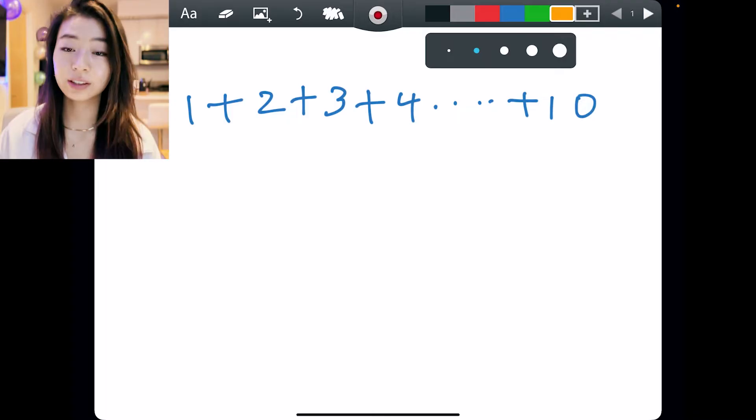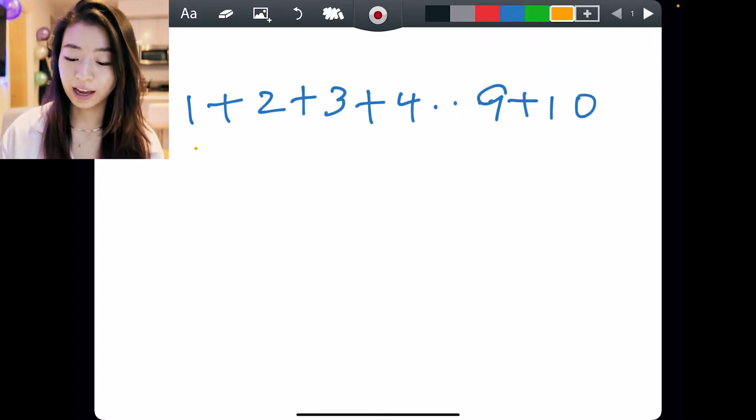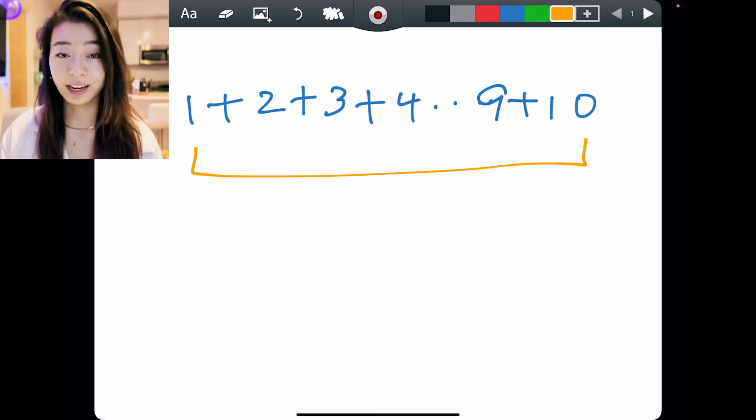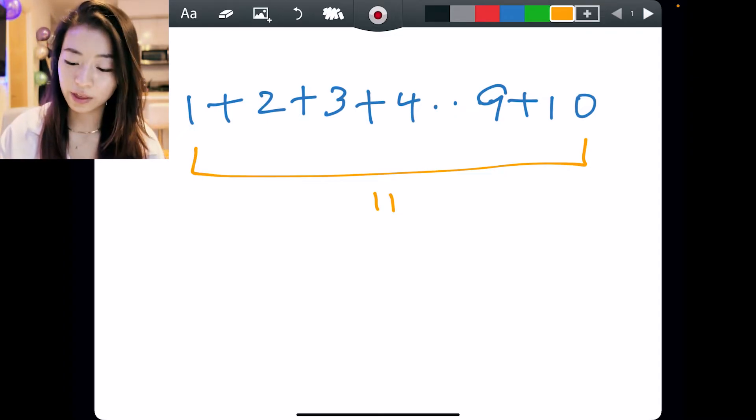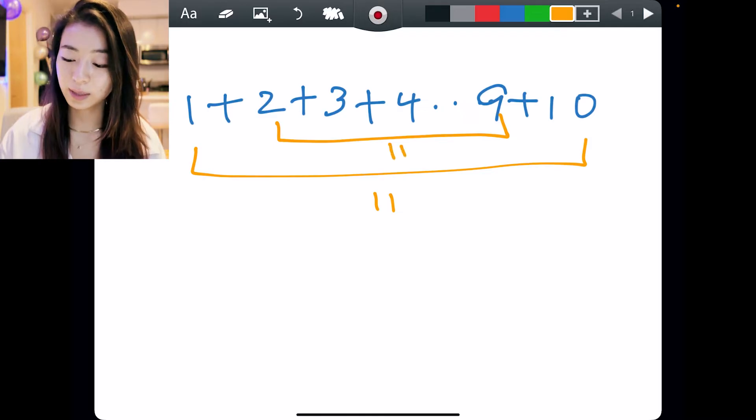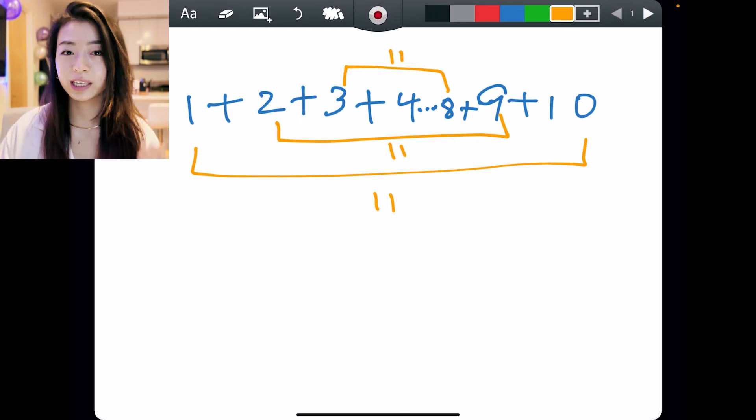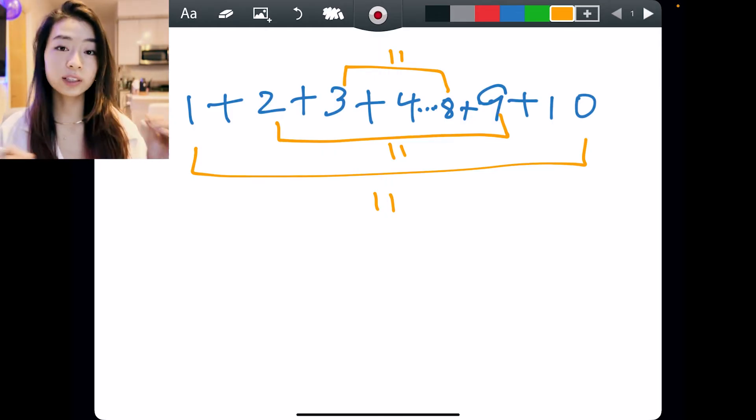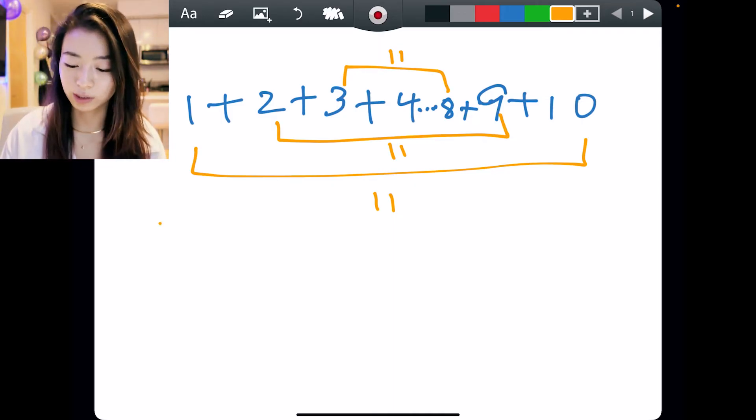Well, we can consider the following. If we add the first and last together, we get 11. Why do we do this? Because if we add the second and second to last, we get the same sum of 11. That means we can keep doing this to pair the numbers to sum up to 11.